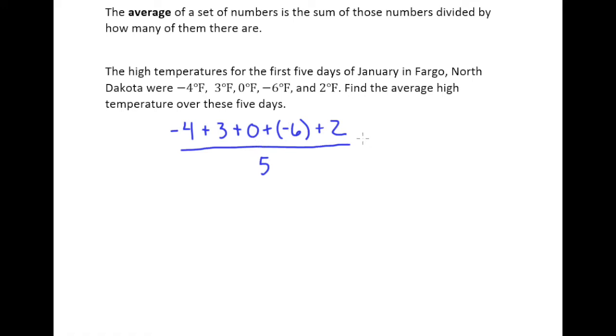Now we can go through and start adding. We have negative 4 plus 3 over there on the left and since the signs are different we subtract. And the negative wins because it's on the 4 which is a larger absolute value. So I have negative 1, at this point it's safe to drop my 0, plus negative 6, plus 2. And that's all still divided by 5.